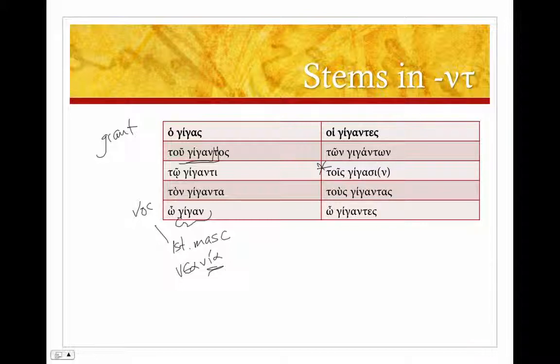So when stems that end in nu tau, in the dative plural, the stem drops out. And something else happens. This alpha, which in all of these other cases was short, becomes long. There's an idea called compensatory lengthening.